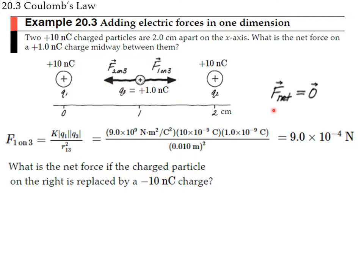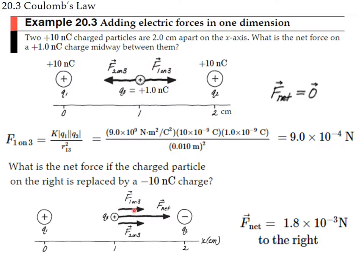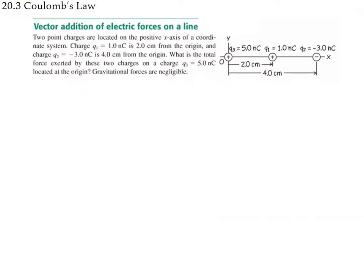Now suppose the right charge is changed to –10 nC. The left positive charge still repels the middle charge to the right. But the right negative charge now attracts the middle charge, also pulling it to the right. These two forces add up, giving a net force twice as large — 2 × 9×10⁻⁹ N — pointing to the right.